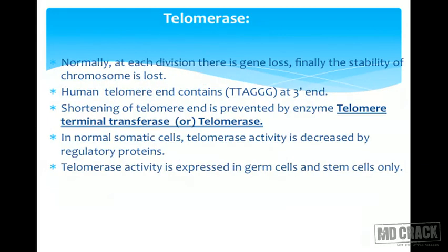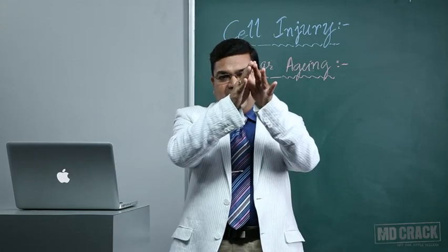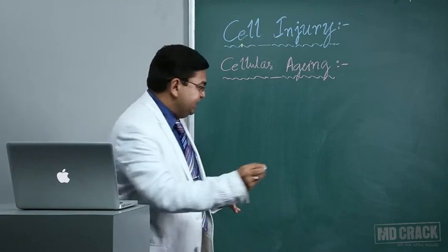Telomerase enzymes are important in aging. Normally, at each cell division, a portion of genetic material is lost; however, chromosome stability is maintained. If telomerase function is hampered, this stability is lost. Human telomere ends contain the sequence TTAGGG at the 3' end of chromosomes. Shortening of telomeres is prevented by enzymes called telomere terminal transferases, also called telomerases. In normal somatic cells, telomerase activity is decreased by regulatory proteins; it is expressed in high quantities only in germ cells and stem cells.